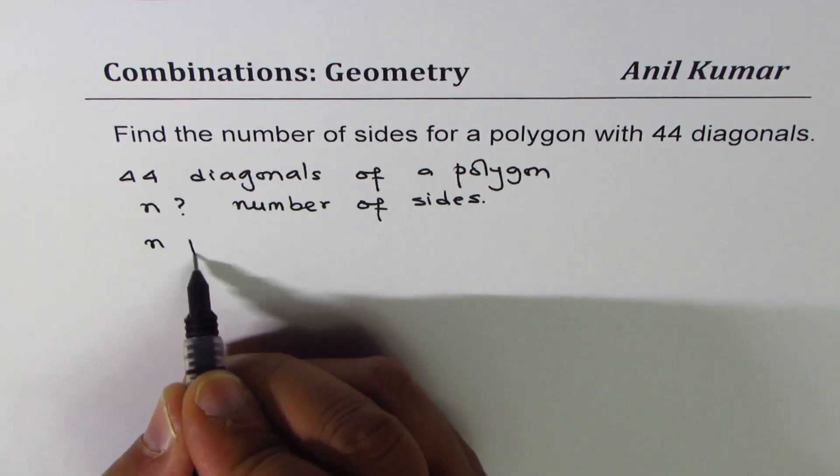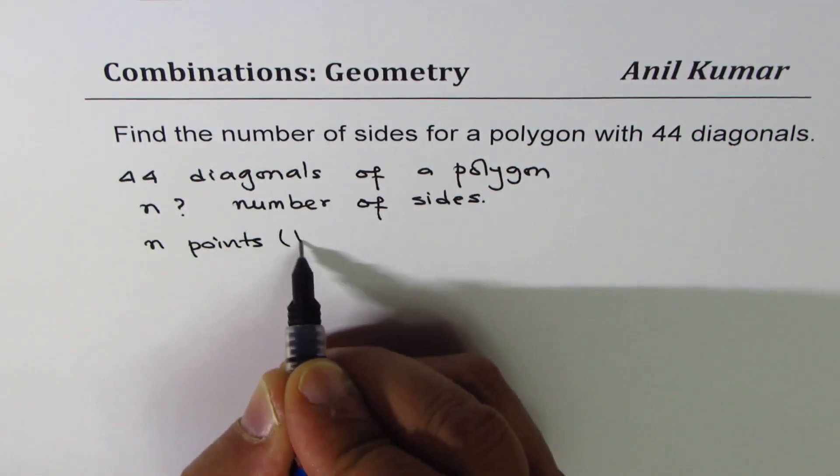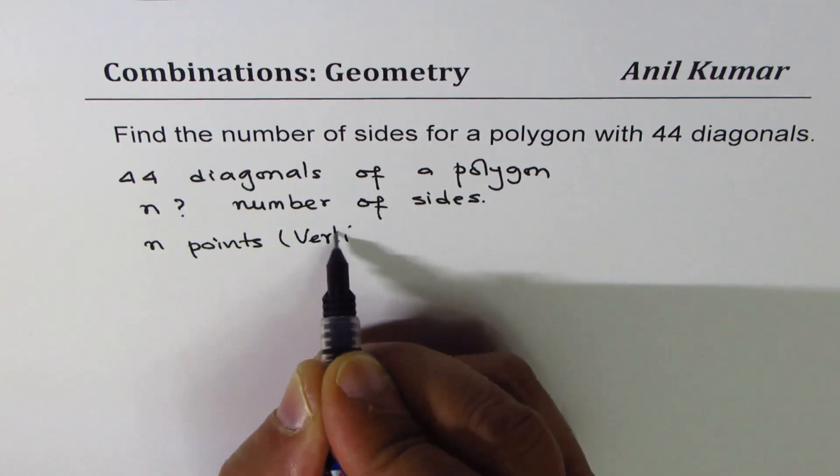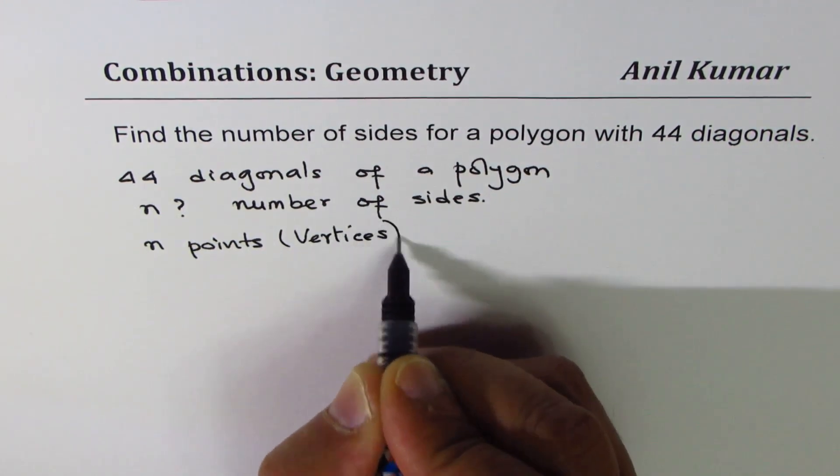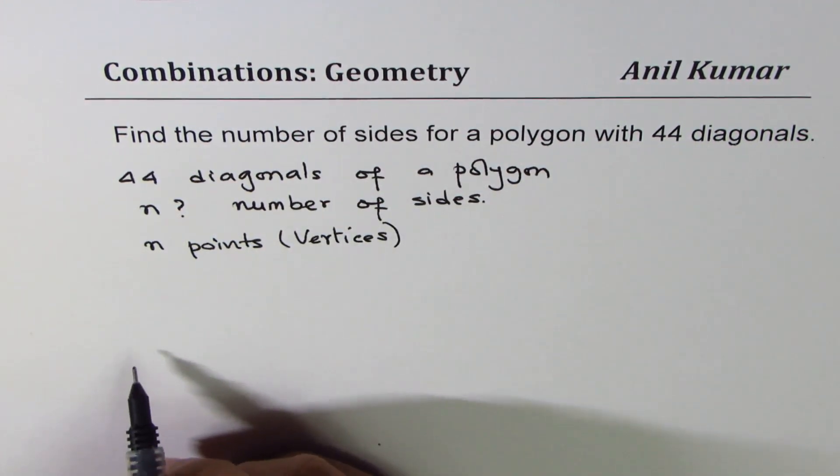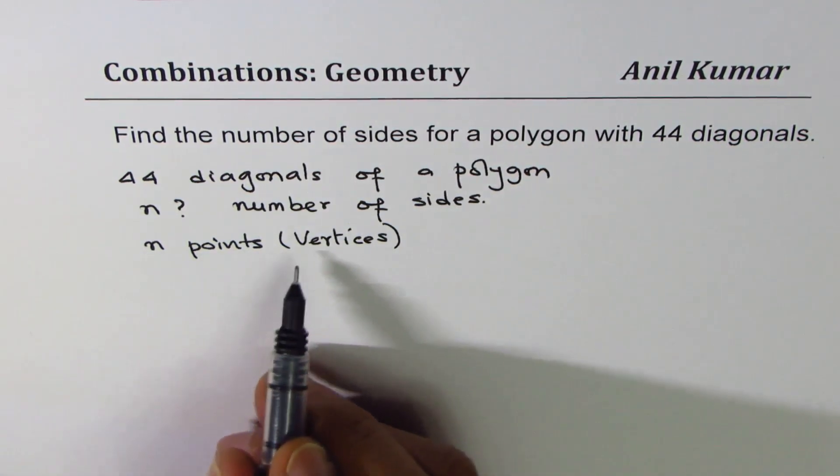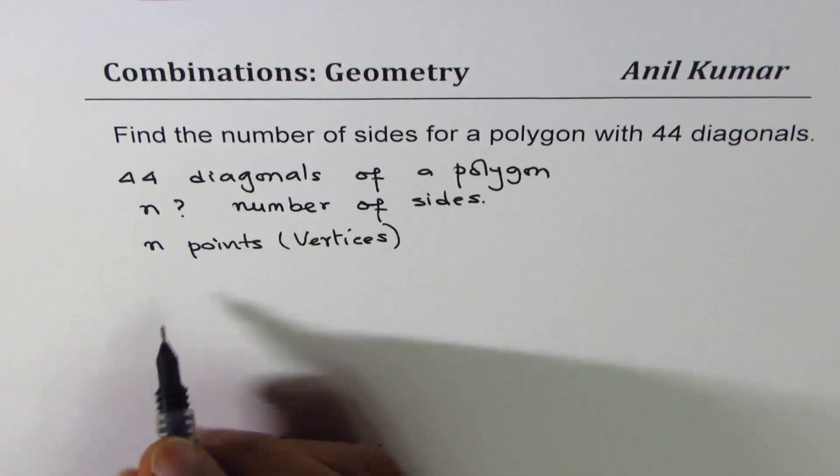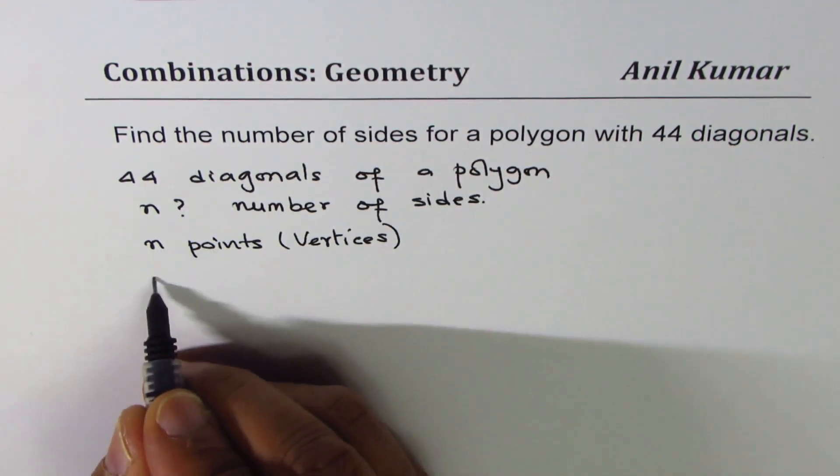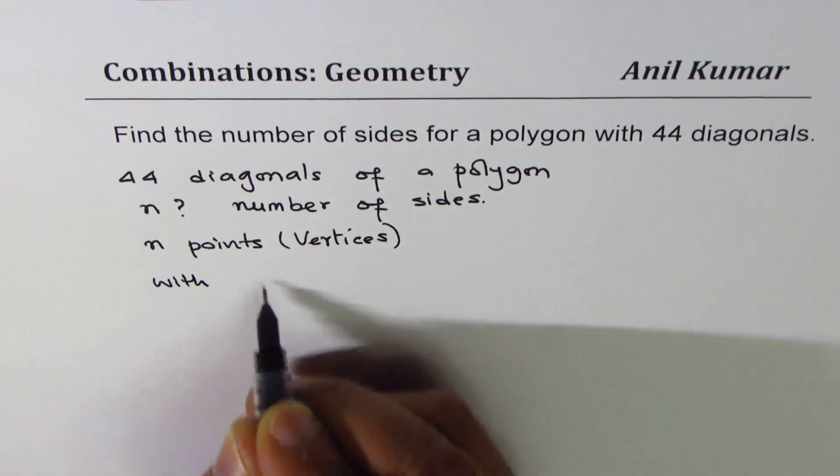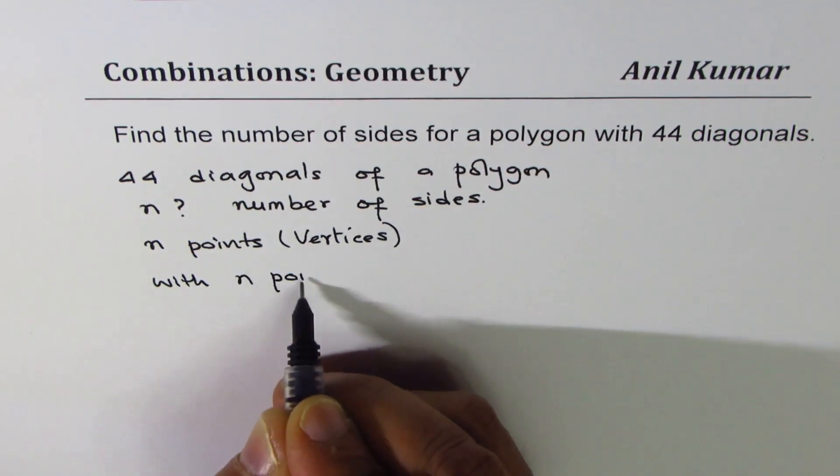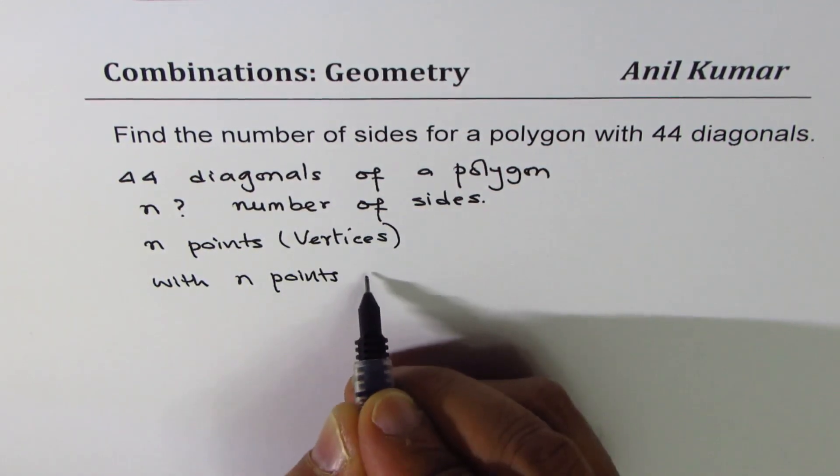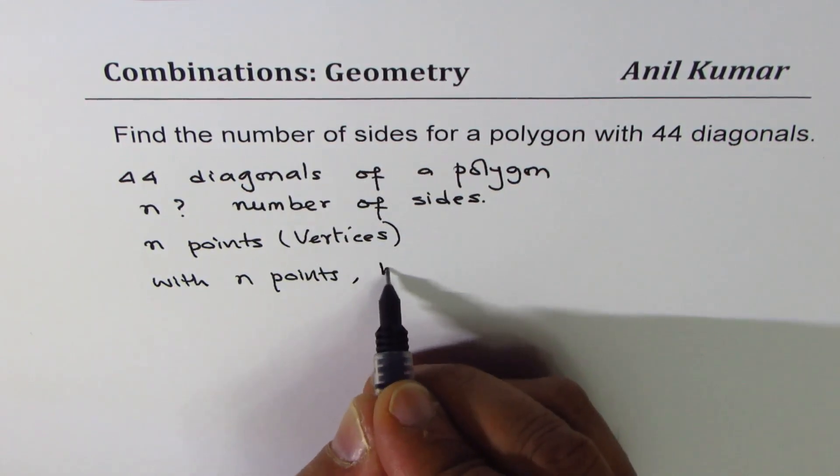So there are n vertices. If there are n points, maximum number of lines, how can you draw and how many can you draw? With n points, how many lines can be drawn? That is what you should think.